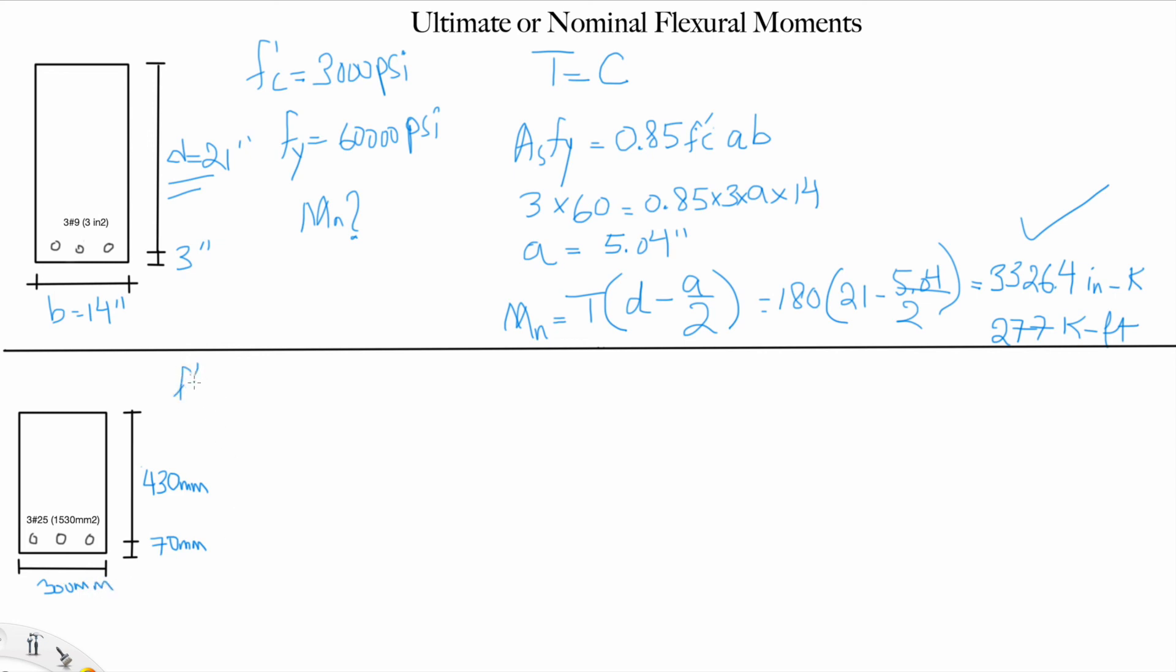Take fc prime as 28 megapascals, which is not much, it's normal. And take the yielding strength as 420, which is the nominal or normal strength. You will always find guys specify 420 for yielding. Determine what's the nominal moment strength. Same procedure: T equals C, As multiplied by fy which is 420.